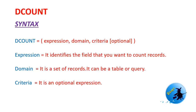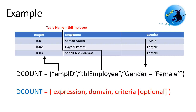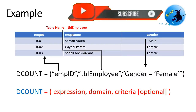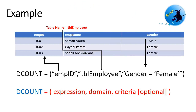I would like to explain this structure using a practical example. Here I have a table called tbl_employee, which contains three columns: employee ID, employee name, and gender. When it comes to the DCount function, we want to count the number of records representing female employees. The DCount function has three components — expression, domain, and criteria. The expression means the specific field used to count records, so here expression equals employee ID.